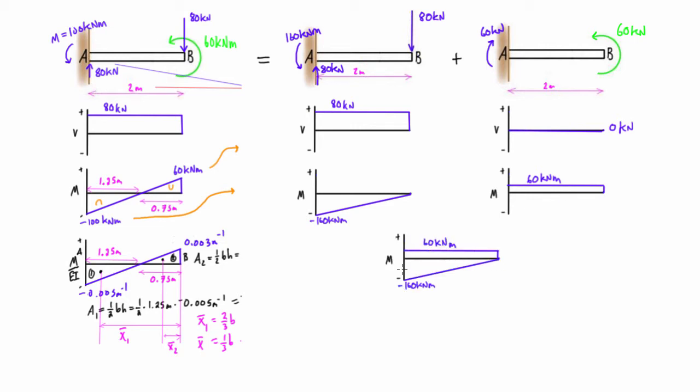You'll notice here, if we added up any point on this, for example at the beginning here, negative 160 plus positive 60 starts us at negative 100, which is exactly where the actual bending moment diagram starts. At the end, zero plus 60 kilonewton meters gives us 60 kilonewton meters at the far right hand side.